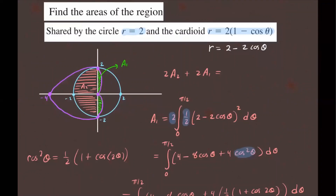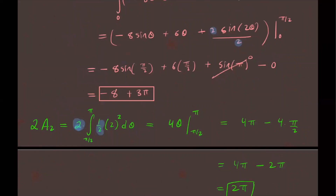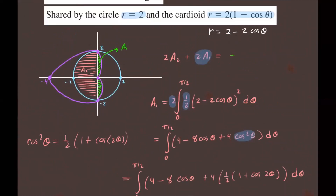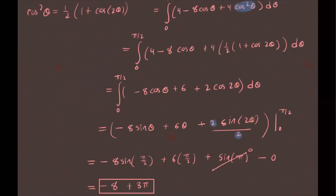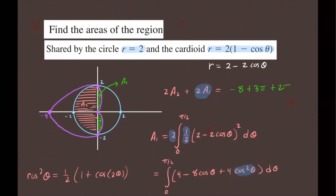Writing the final answer: 2 times A1 is negative 8 plus 3π, and 2 times A2 is 2π. Adding these together, the total area of the shared region is negative 8 plus 5π. That is the area of the region shared by the circle and the cardioid.